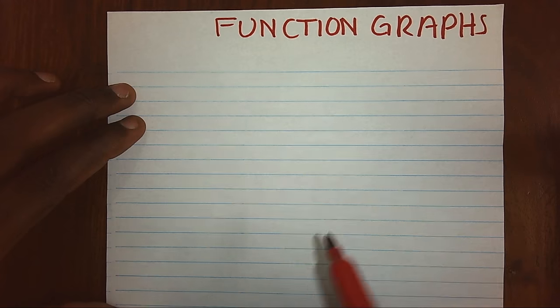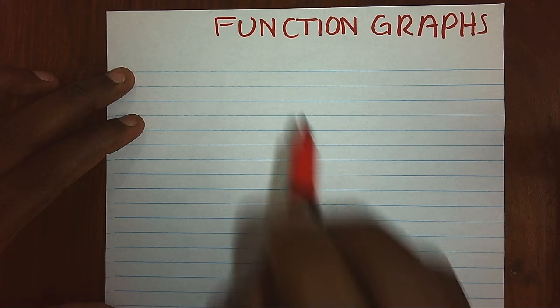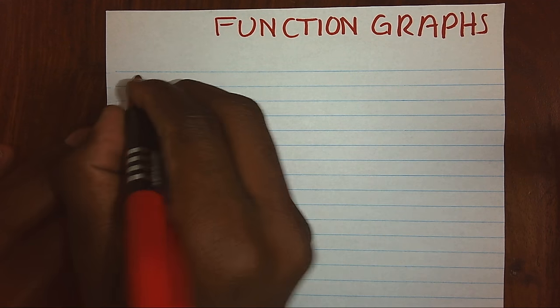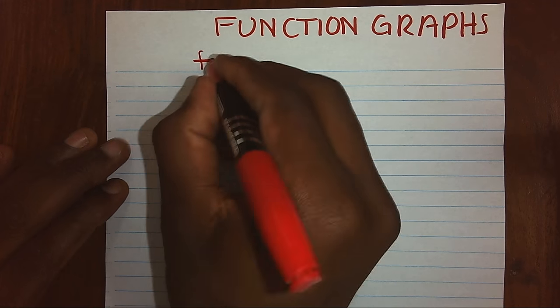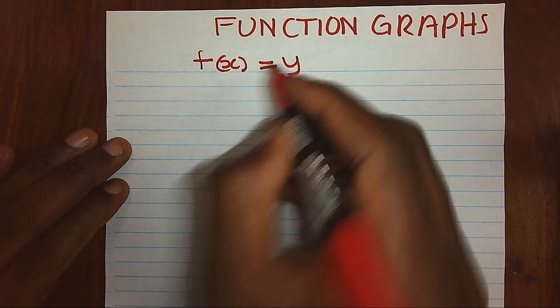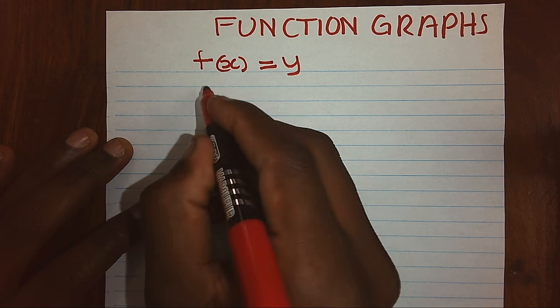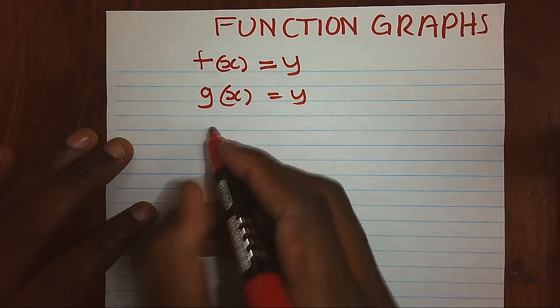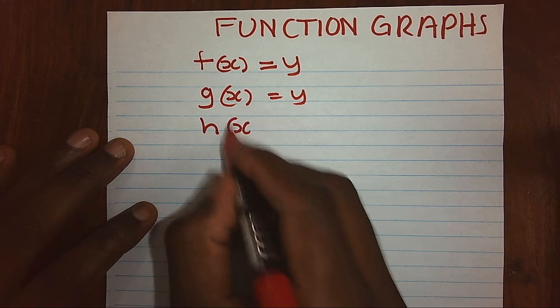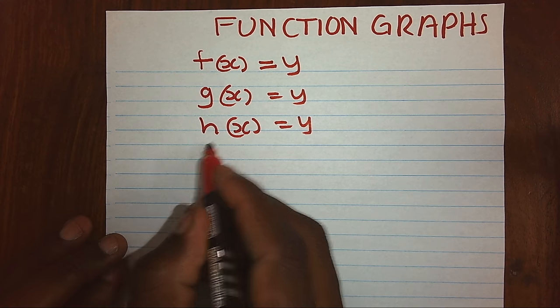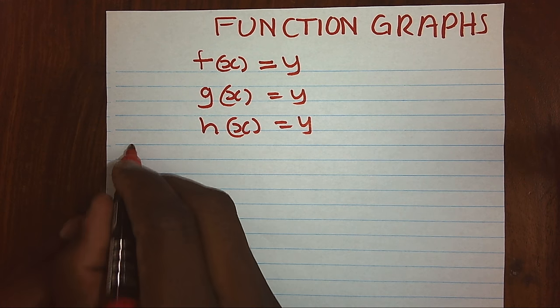We are looking at function graphs. Under functions we have a number of graphs. First of all, we know that a function is given by that notation. We can have so many different functions. We can have function f of x equals y, function g of x equals y, or function h of x equals y. Now we want to see the graphs of these functions.